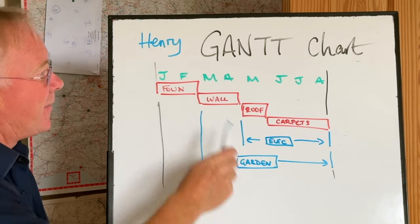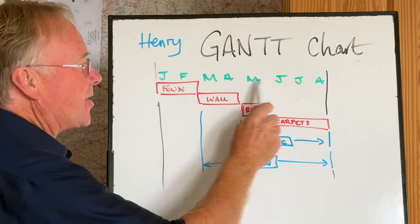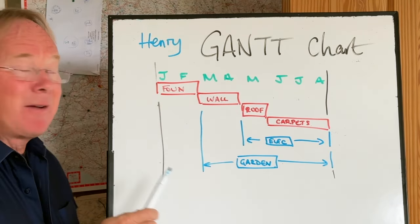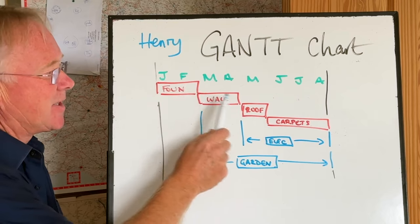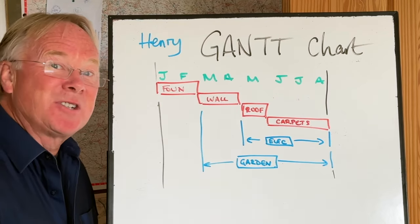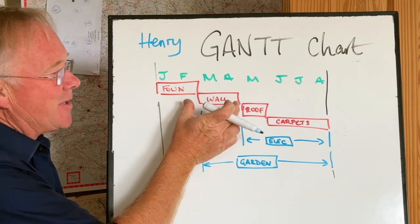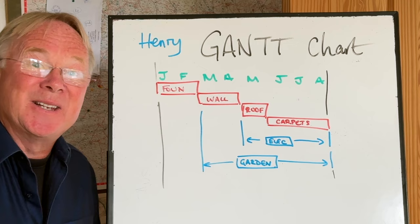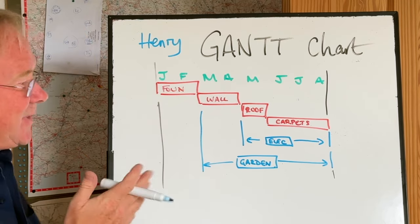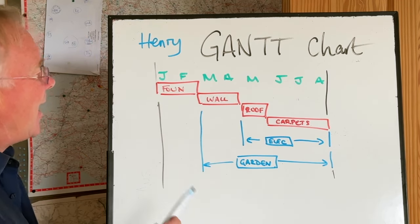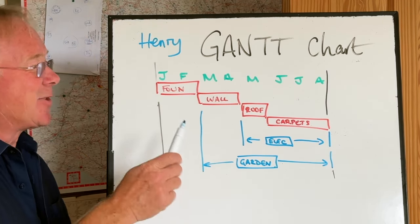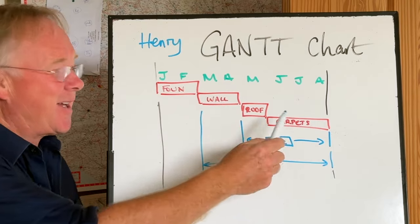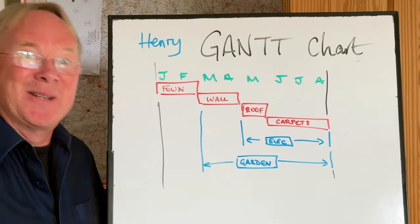You have the timescale across the top — I've got months here, but it could be weeks — and then you have your main tasks. This is known as the critical path, and these are the ones that define how long your project is going to take. In my simplified example here, I've got building a house: the foundations, the walls, the roof, and then the carpets.